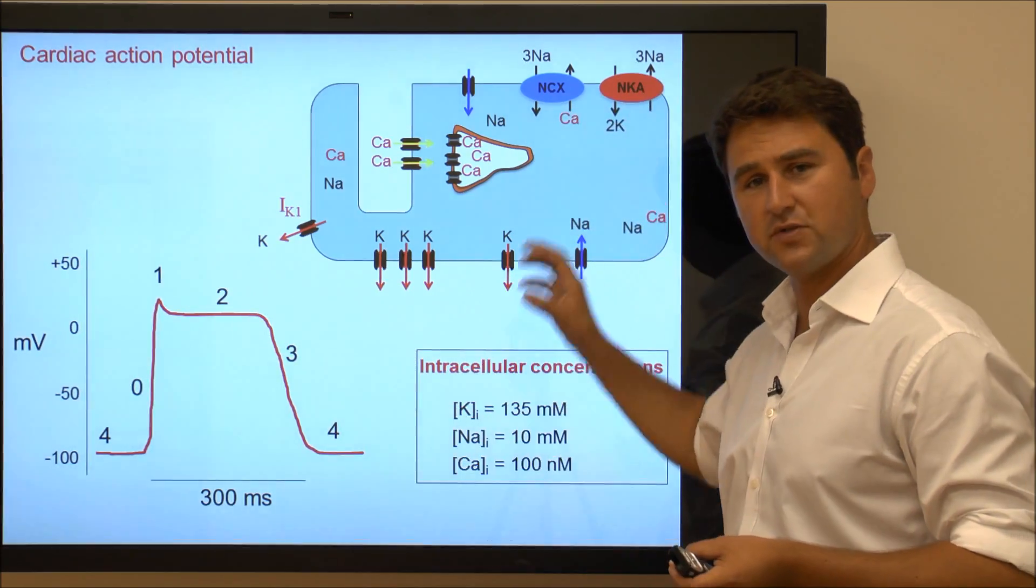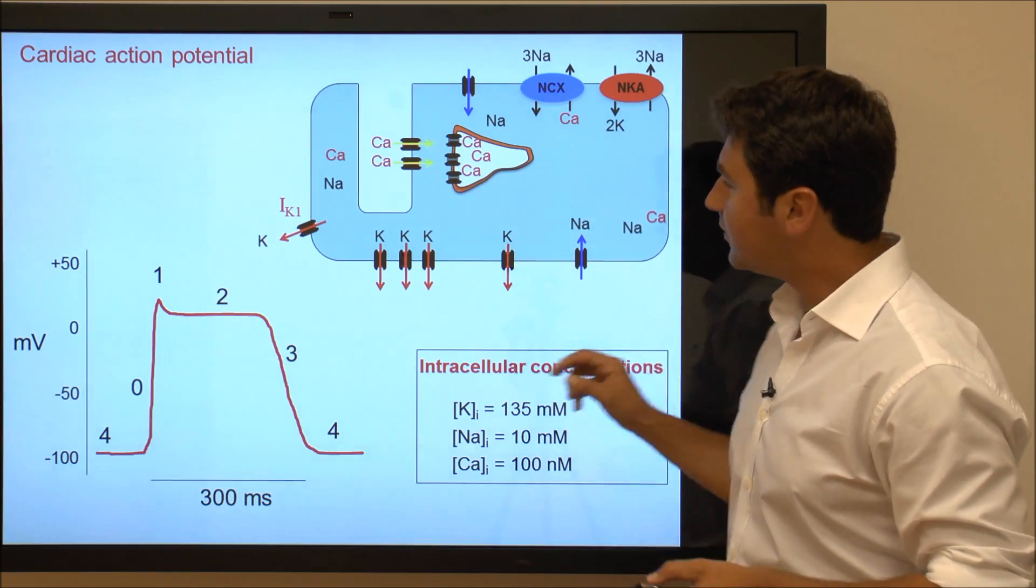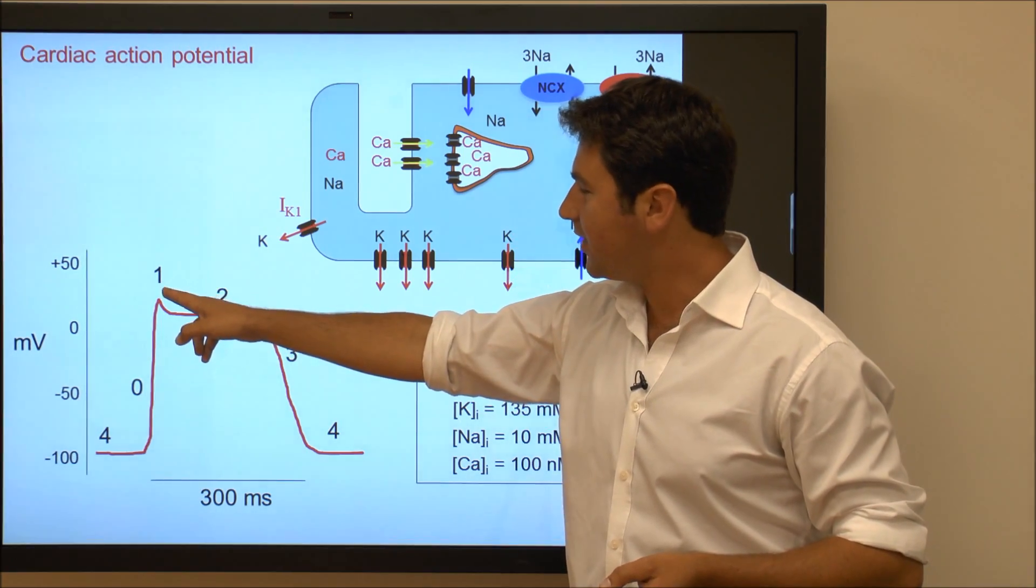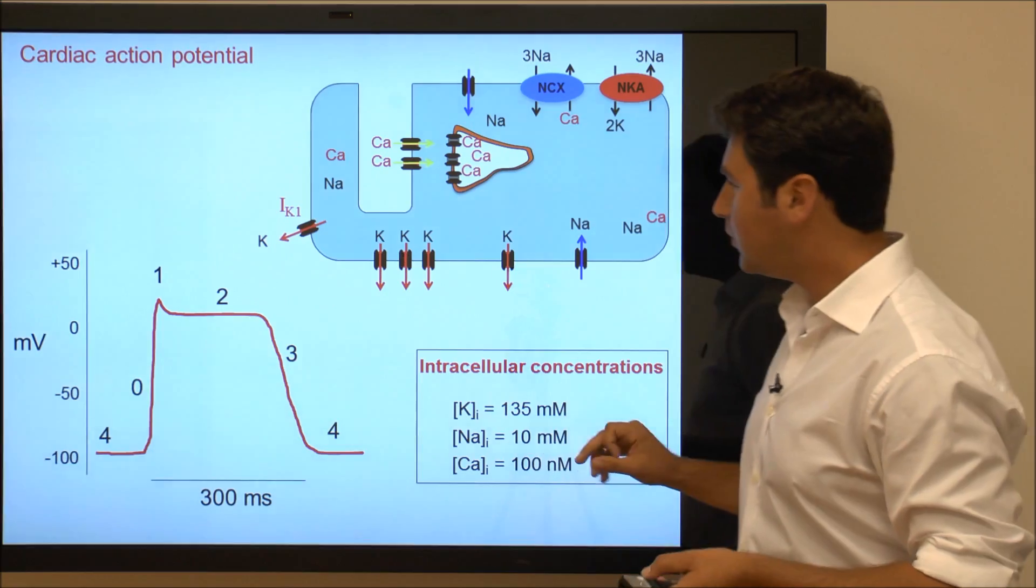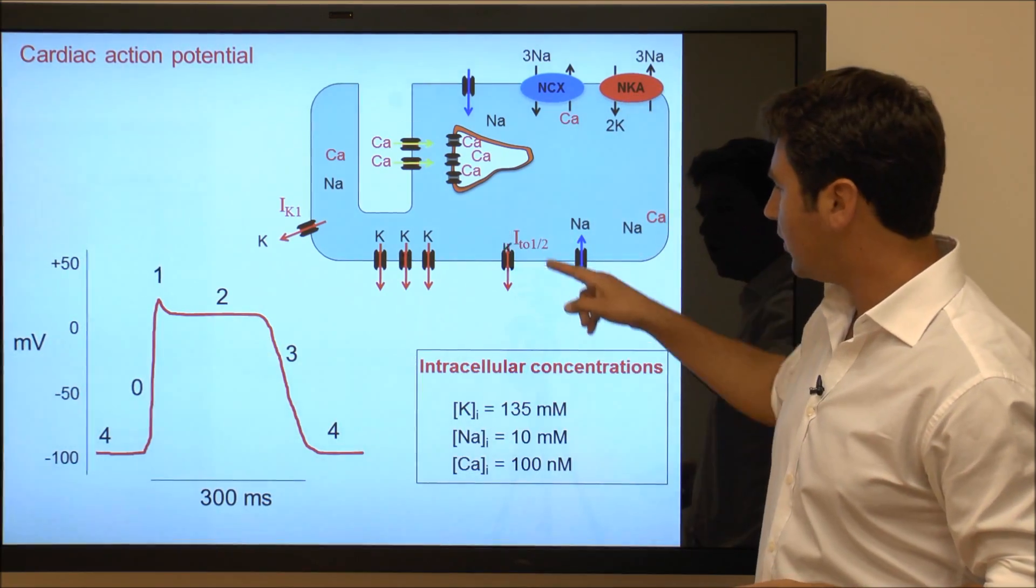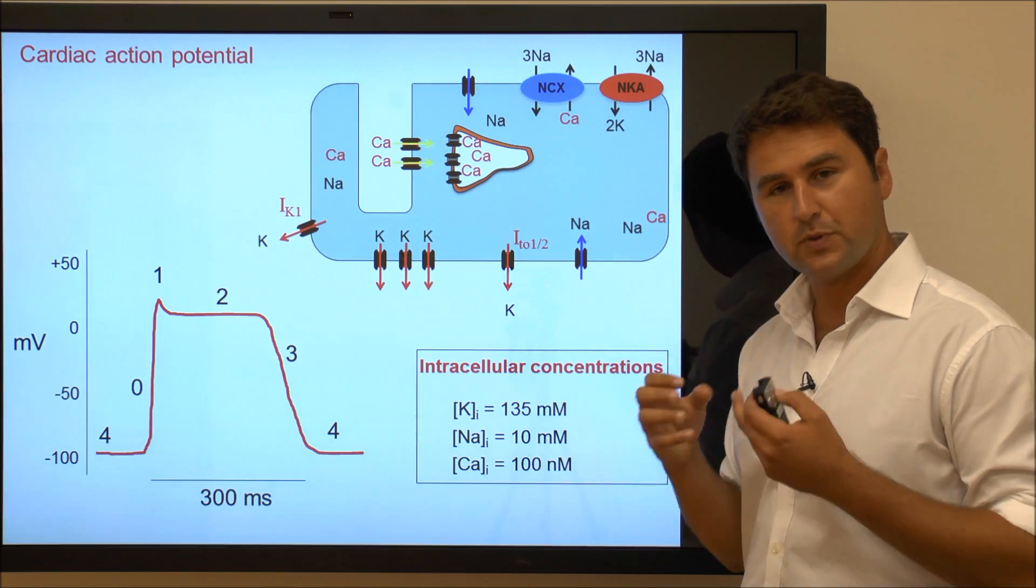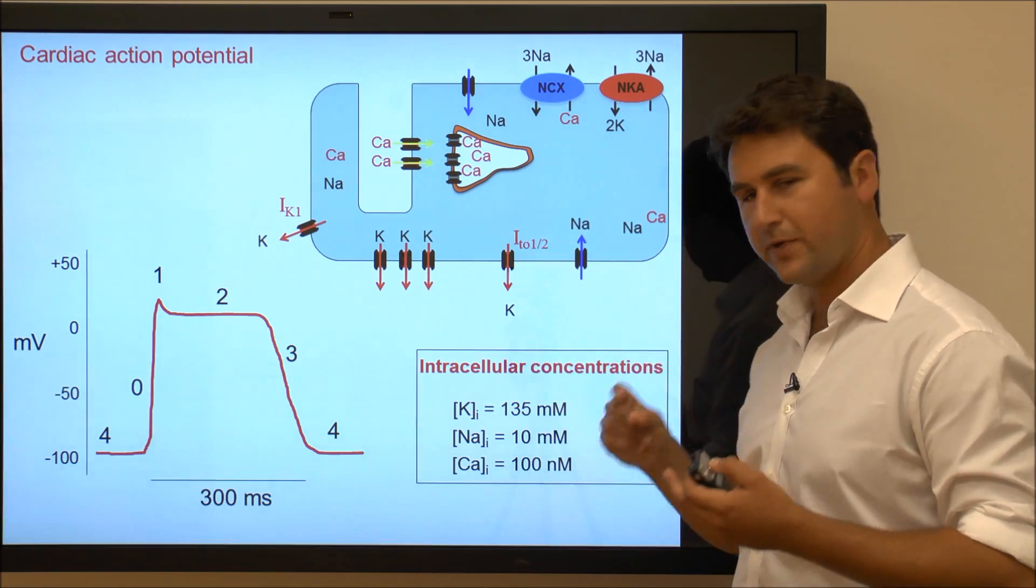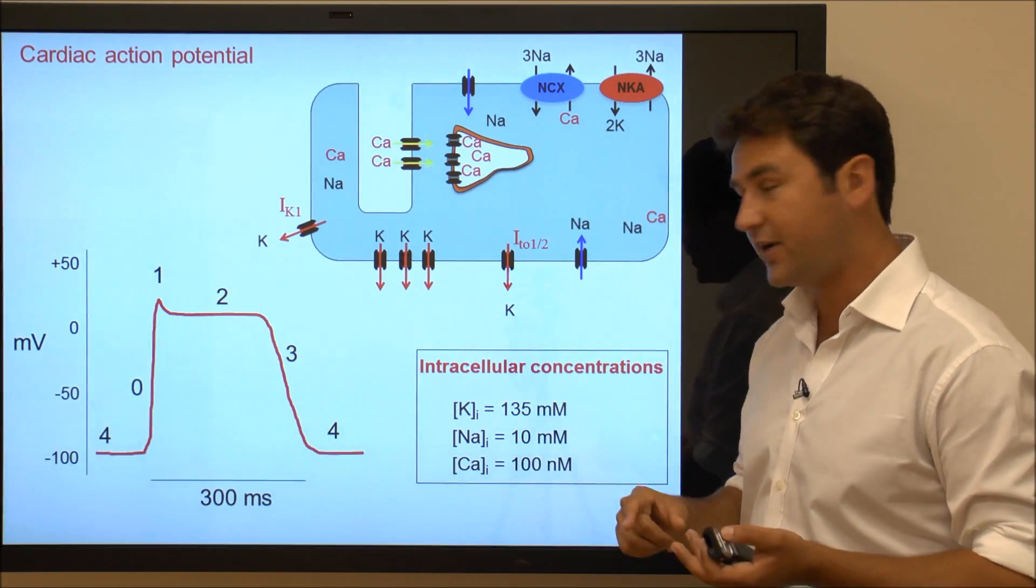At positive charges, they get switched off. And at a very positive charge here you can see this little dip, that is mainly a result of Ito, which is a potassium channel which switches on and switches off very quickly.